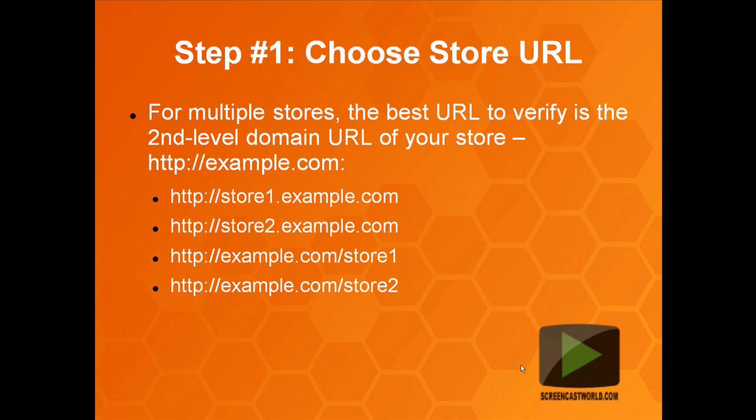For multiple stores, the best URL to verify is the second level domain URL of all your stores. So if you had multiple stores running off the same domain, for example store1.example.com or store2.example.com, or whether you have your store running in a subpath such as example.com/store1 or store2, then you'll need to use the second level domain example.com. Any subdomains or paths will be automatically claimed as well.